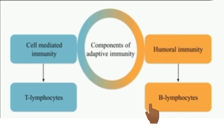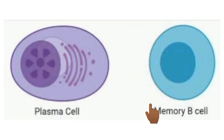B lymphocytes were first discovered in the bursa of Fabricius in birds, hence they are called B lymphocytes. The bursa of Fabricius is a lymphoid organ situated near the cloaca of birds. The bursa is absent in mammals, and the processing of B lymphocytes takes place in the liver during fetal life and in the bone marrow after birth. After processing, B lymphocytes are transformed into plasma cells and memory cells, and are stored in lymphoid tissues of lymph nodes, the spleen, bone marrow, and gastrointestinal tracts.